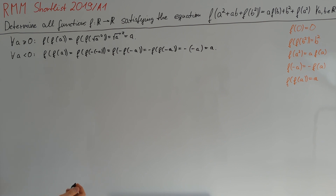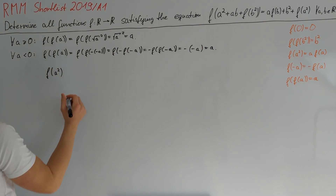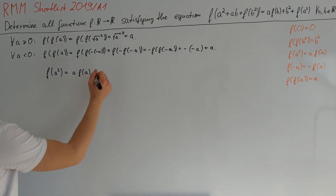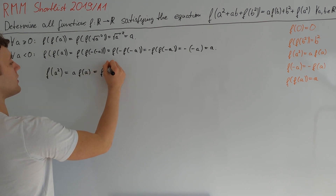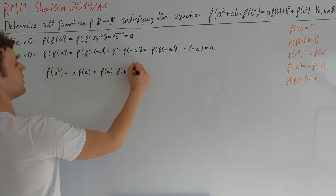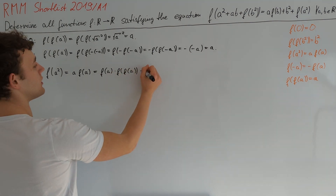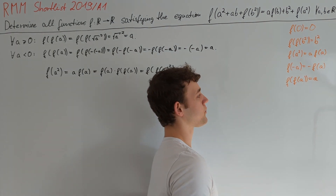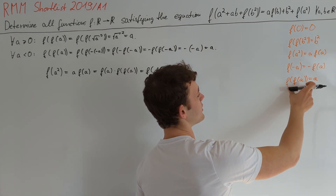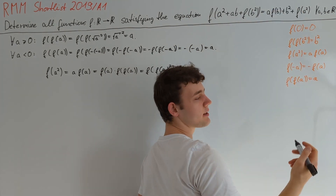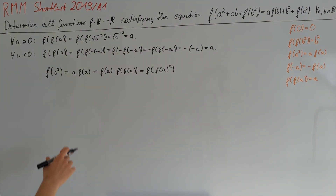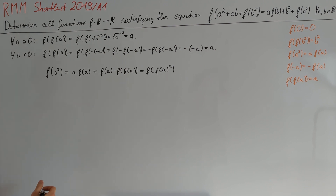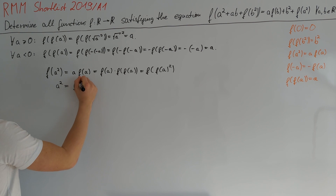We already know f(a²) = a·f(a). We can rewrite this as f(a·f(f(a))) = f(f(a²)). This equation — f(f(a)) = a — also implies f is bijective. Since f(a²) = f(f(a²)), injectivity forces a² = f(a)², meaning f(a)² = a² for all a.